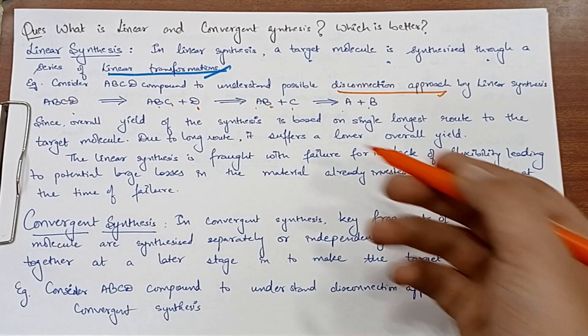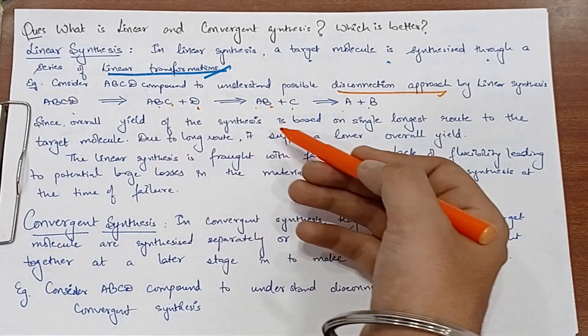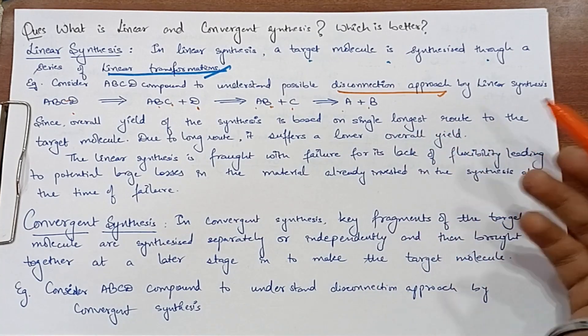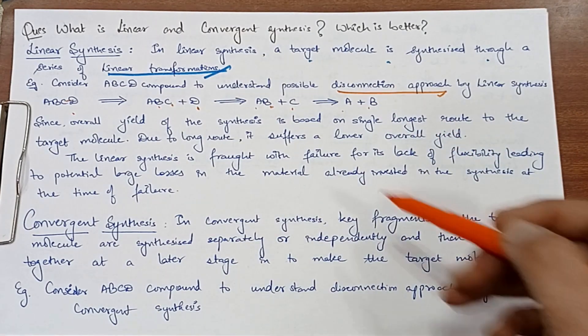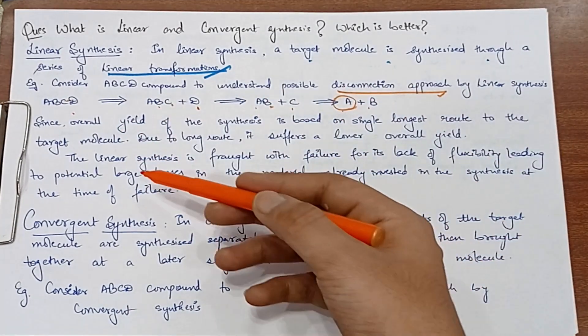So what is our linear synthesis? Since overall yield of the synthesis is based on single longest route to the target molecule. Okay, yaha par kya ho raha hai? Ek molecule mein A banana tha. Toh kitna lamba route chala gaya hai?